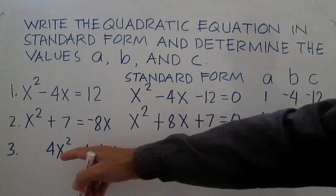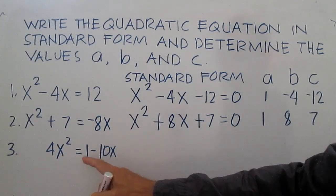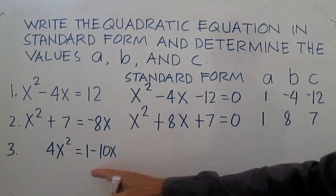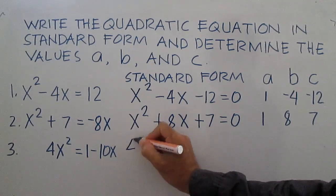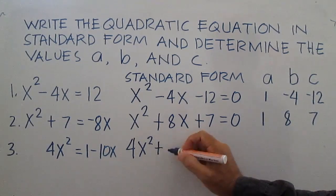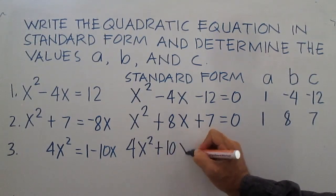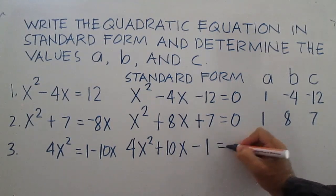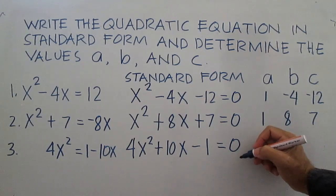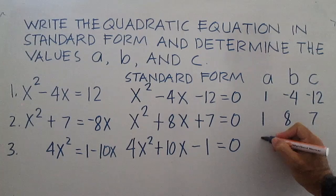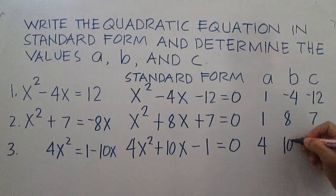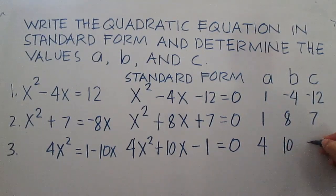Another example: 4x squared equals 1 minus 10x. In standard form, this is 4x squared plus 10x minus 1 equals 0. A is 4, b is 10, and c is negative 1.